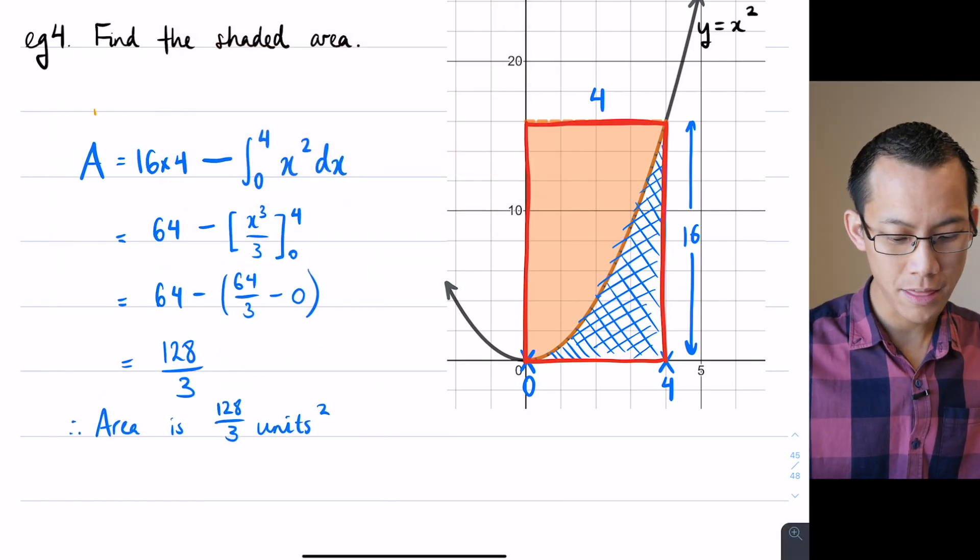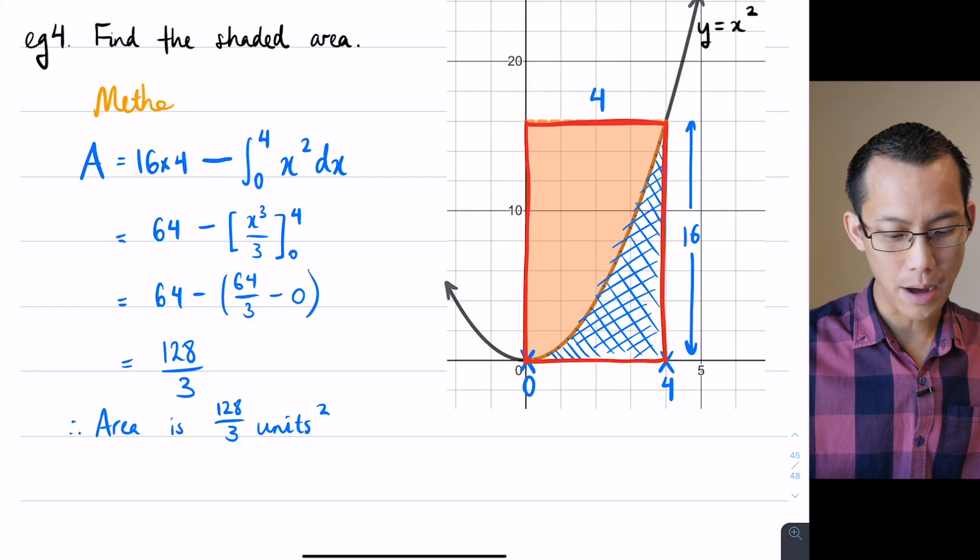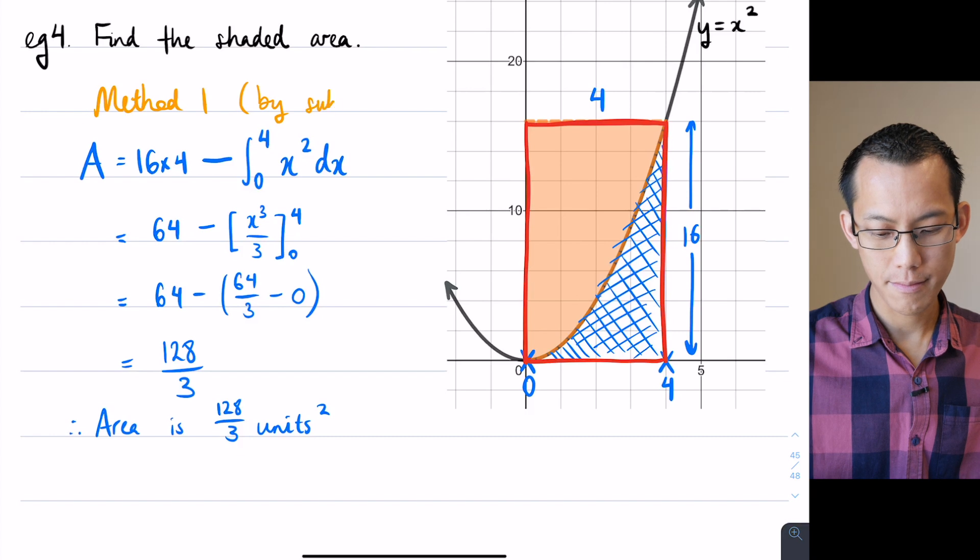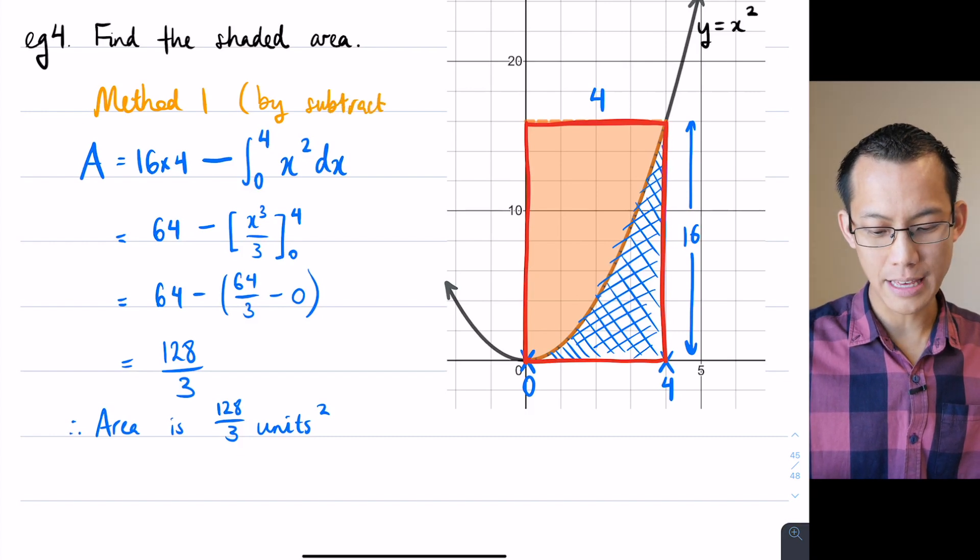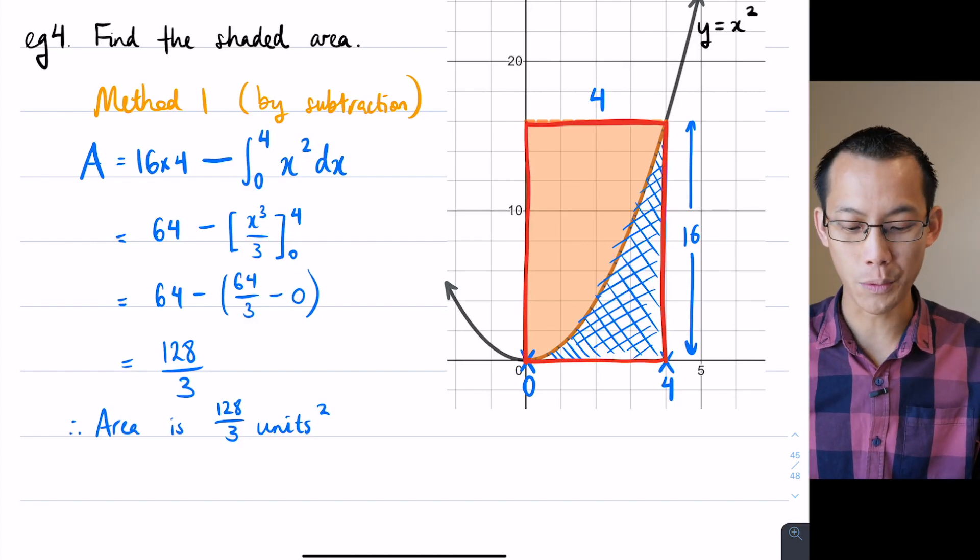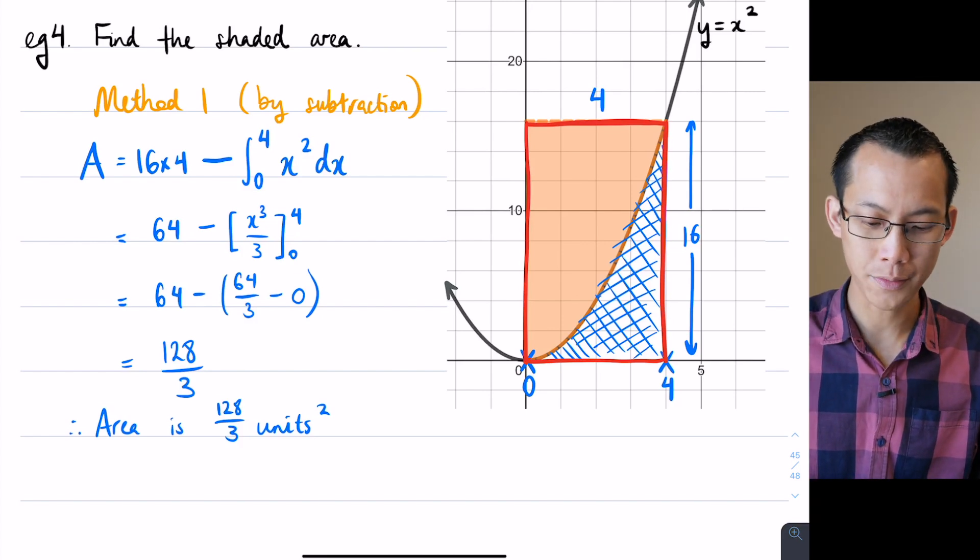So I'm going to call this guy method 1. This is, I guess you could call it by subtraction. So we worked out the area under the curve which we are very good at doing, but we worked out that that area isn't the one we want, we need to subtract that from this rectangle.